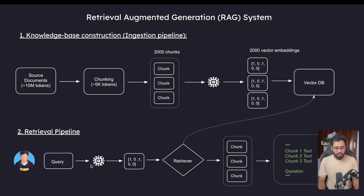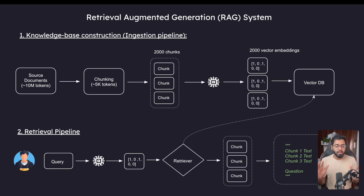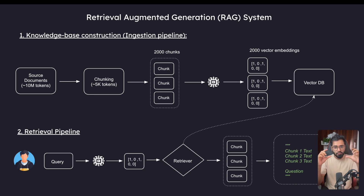To give you a quick refresher: we have the user query, we're embedding that, and then we are creating a component called retriever. This retriever is going to find similar chunks that match the original user query's embedding using an algorithm called cosine similarity. It's going to go ahead and shortlist those first five or ten — or whatever we specify. Finally, we take the query as well as the original chunk passages and then send it to the LLM.